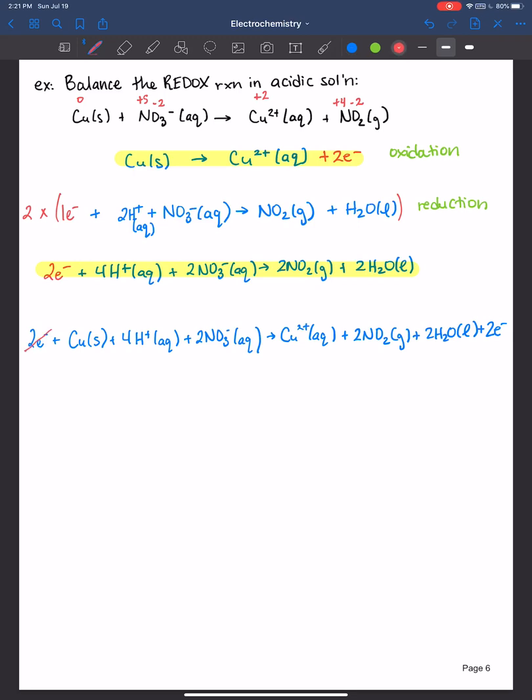And cancel out like species. So the electrons definitely cancel out because they've transferred. And then anything else cancels out. And we don't see that happening here for this equation, but it does happen quite often in the overall equation. So overall, what you would write as your final answer is everything that's left over after cancellation takes place.